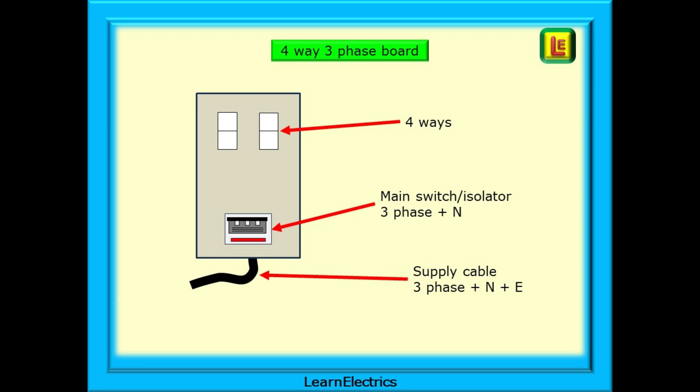There will be a main switch or isolator which will be either three-phase only or three-phase plus neutral. This is different to domestic electrics where the breaker must switch off line and neutral at the same time for the safety of the occupants. With industrial electrics, it's assumed that persons working at the board are suitably skilled persons, so some main switches are just three-phase without a neutral.